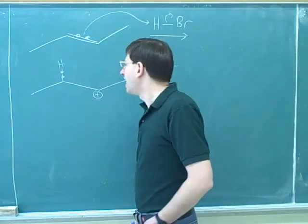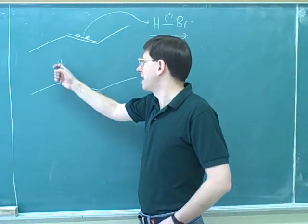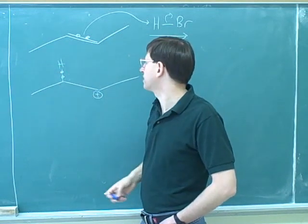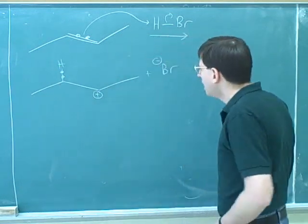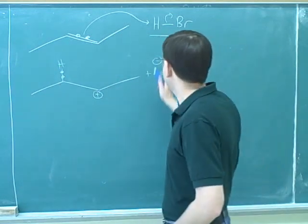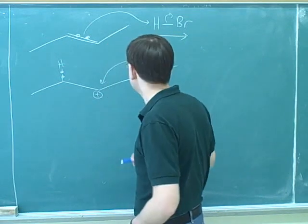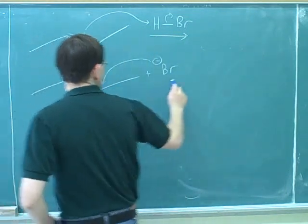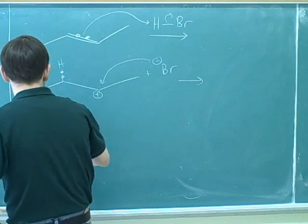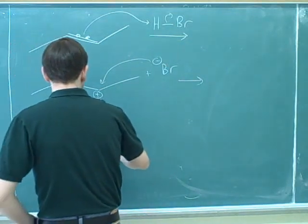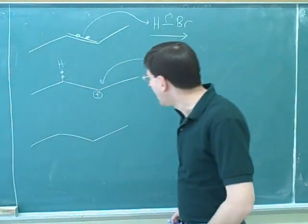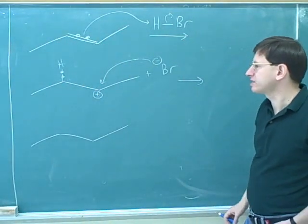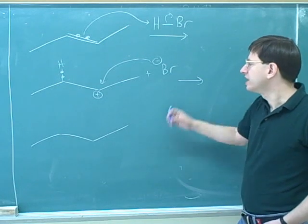So far so good. It's not necessary to actually draw this hydrogen because it's a hidden hydrogen, but maybe it's a good thought-process step to draw that in. And then you correctly solved that the bromide would come in here.